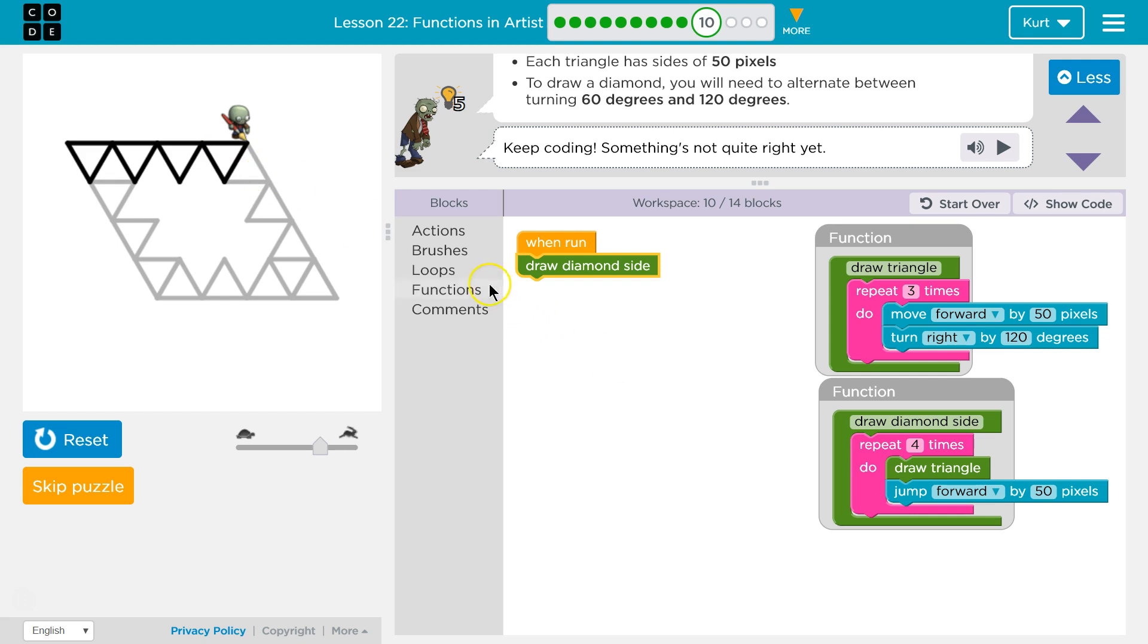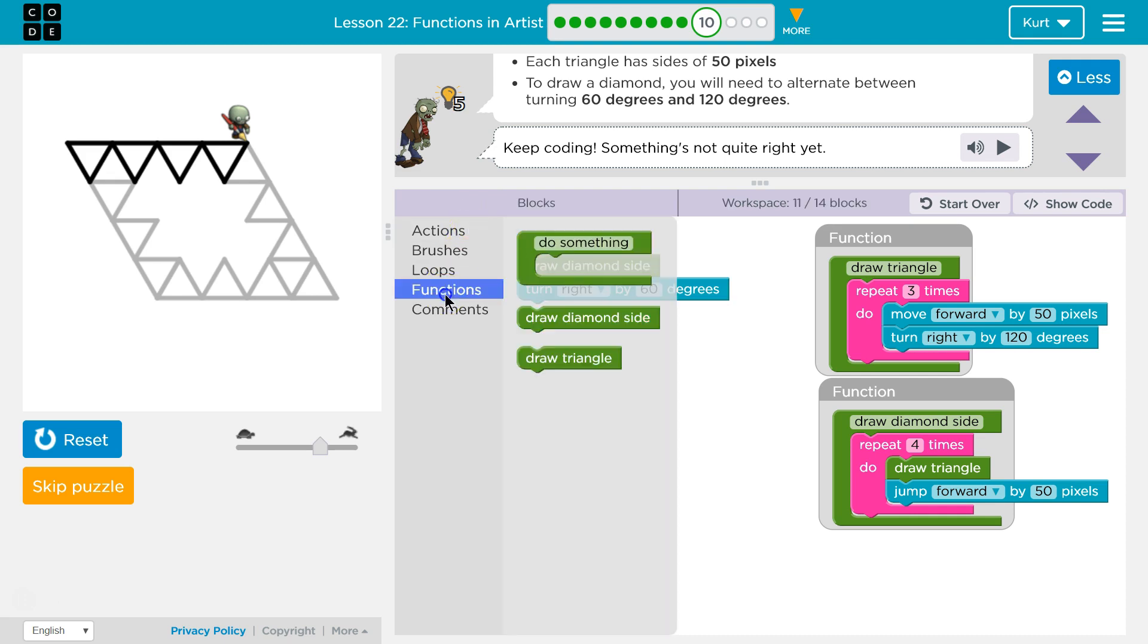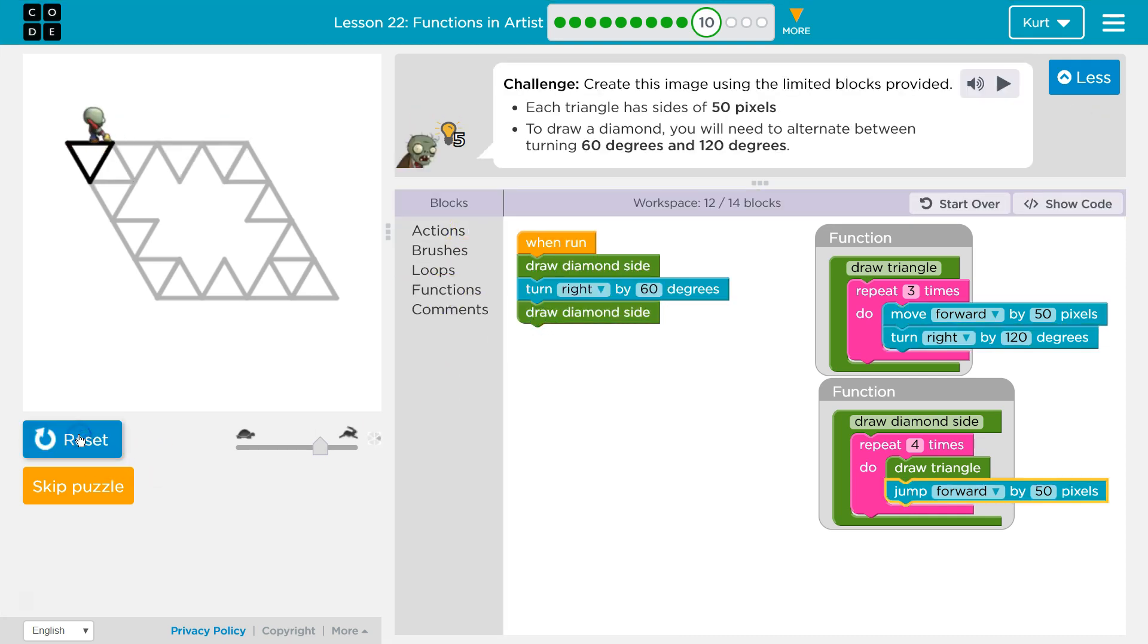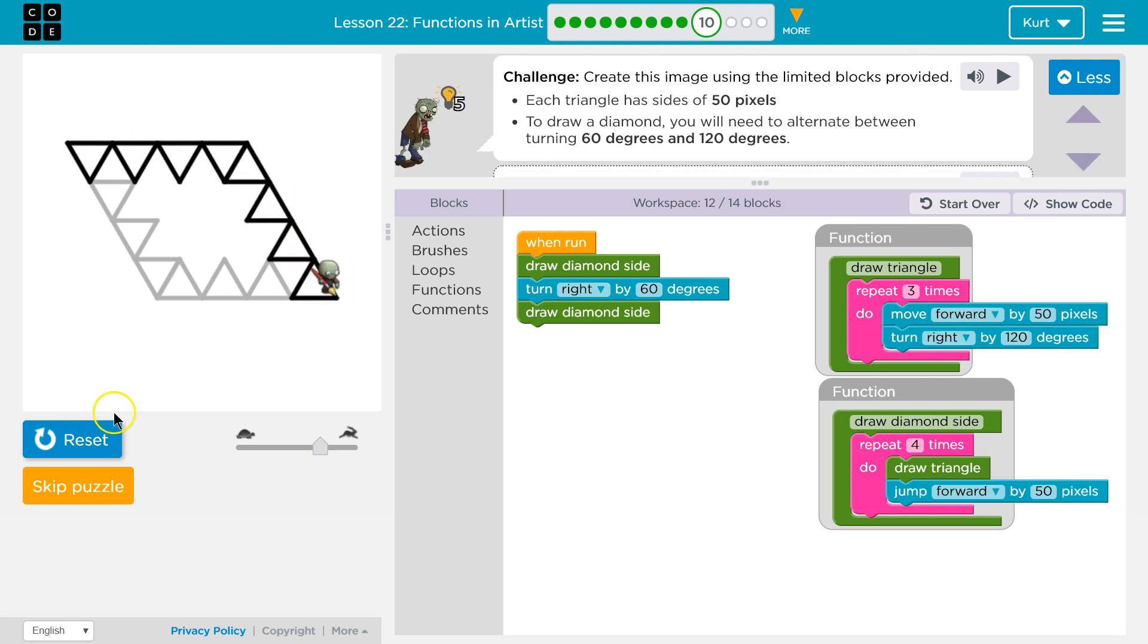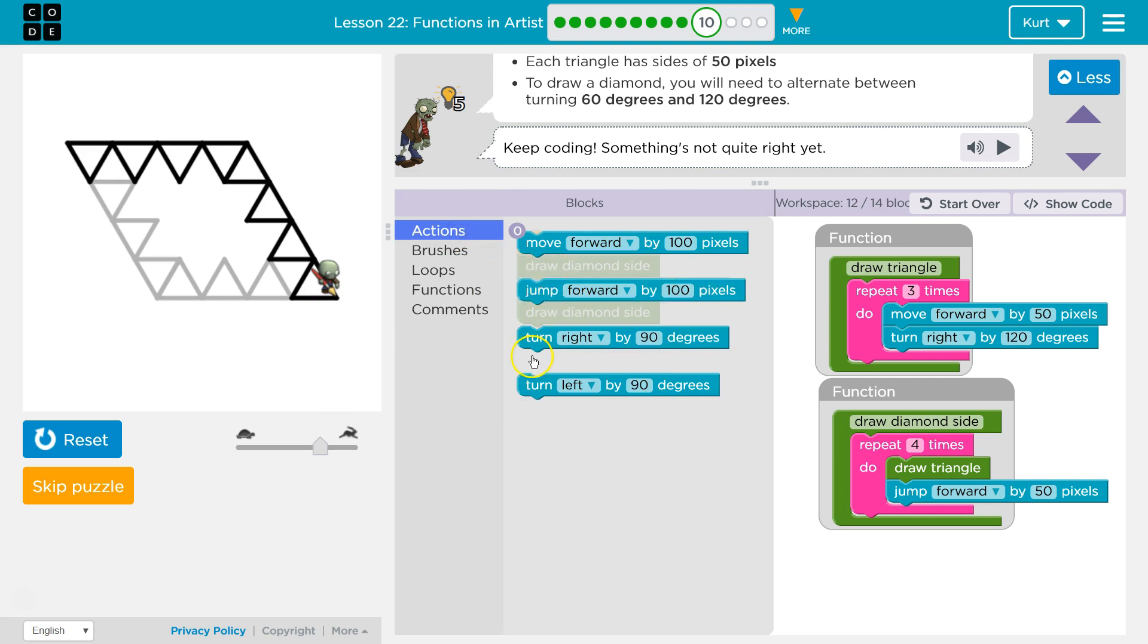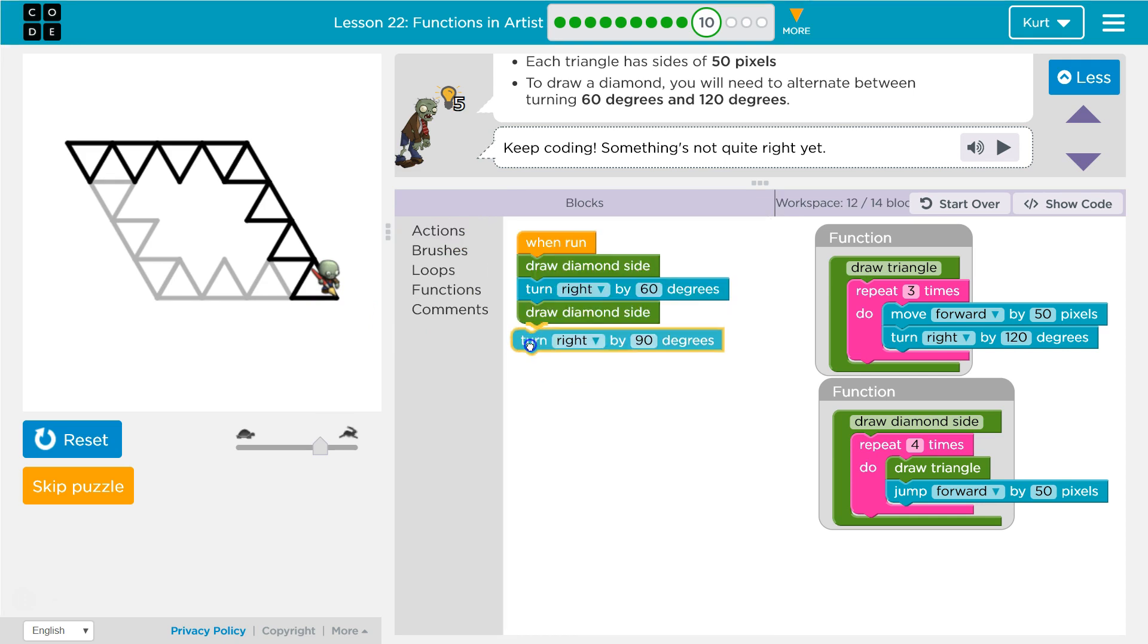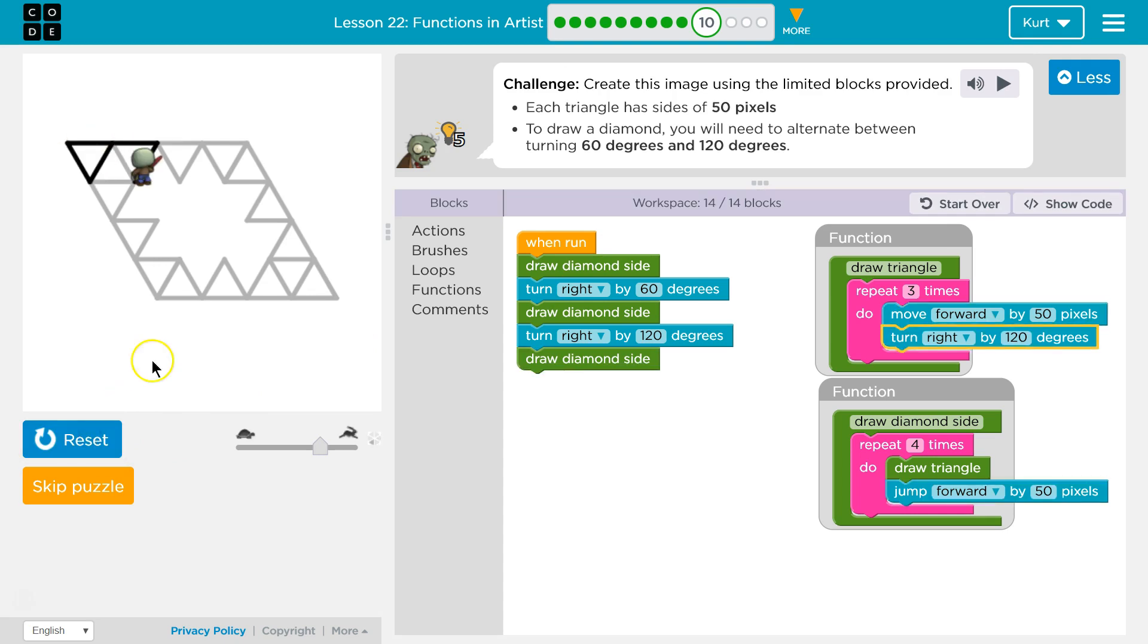Then we're going to turn. And what did I just have that I got rid of? I think turn right by 60. And then we're going to want to draw a diamond side again. Let's try. Okay, and now this is going to be a different turn, right? So, now we're going to turn right by... It looks like it would be, I don't know, like 120. Is that what they... Oh, they gave it to us. Okay. And then function, draw diamond side. We're at 14 blocks, though. Let's see what happens.